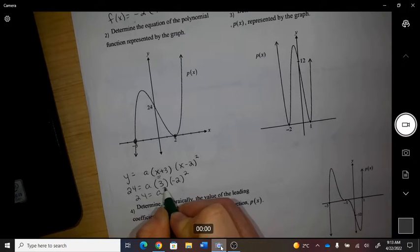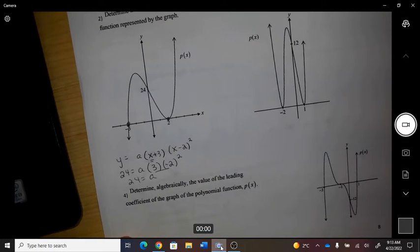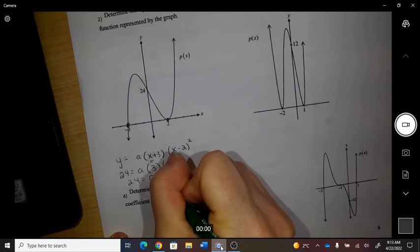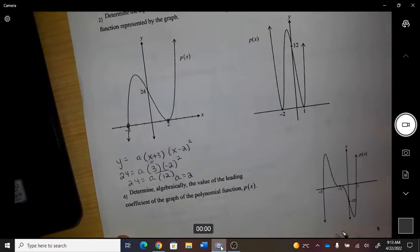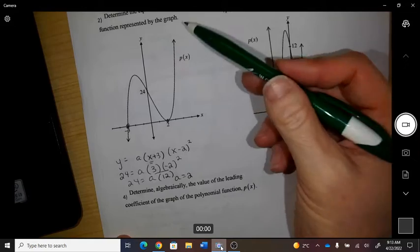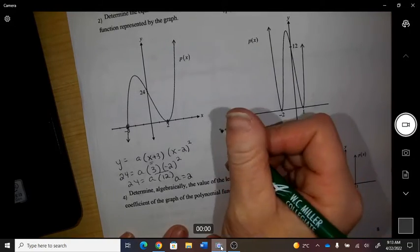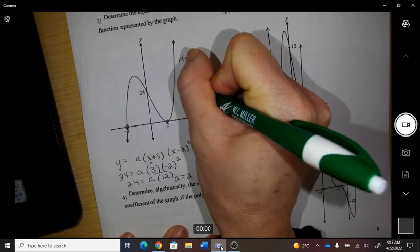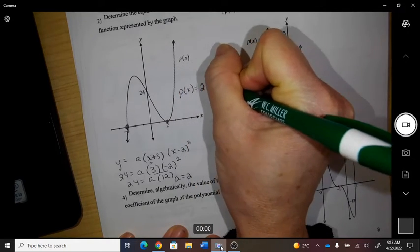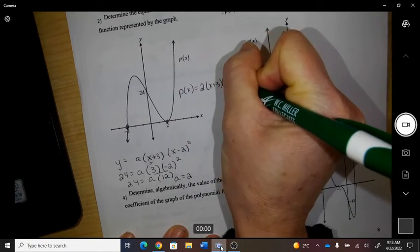So then this would multiply to 3 times positive 4, so 12, so a is 2. Obviously I can also tell by the shape that the slope is positive, so my final answer, so this one's called p of x, so p of x equals 2, and then I can do the factors that I wrote down before.